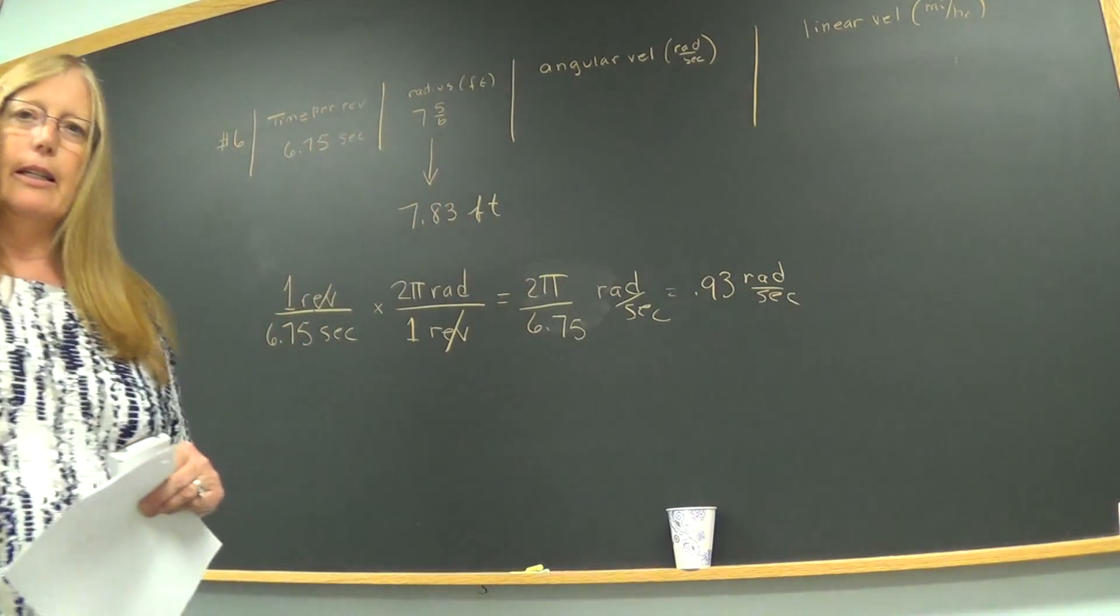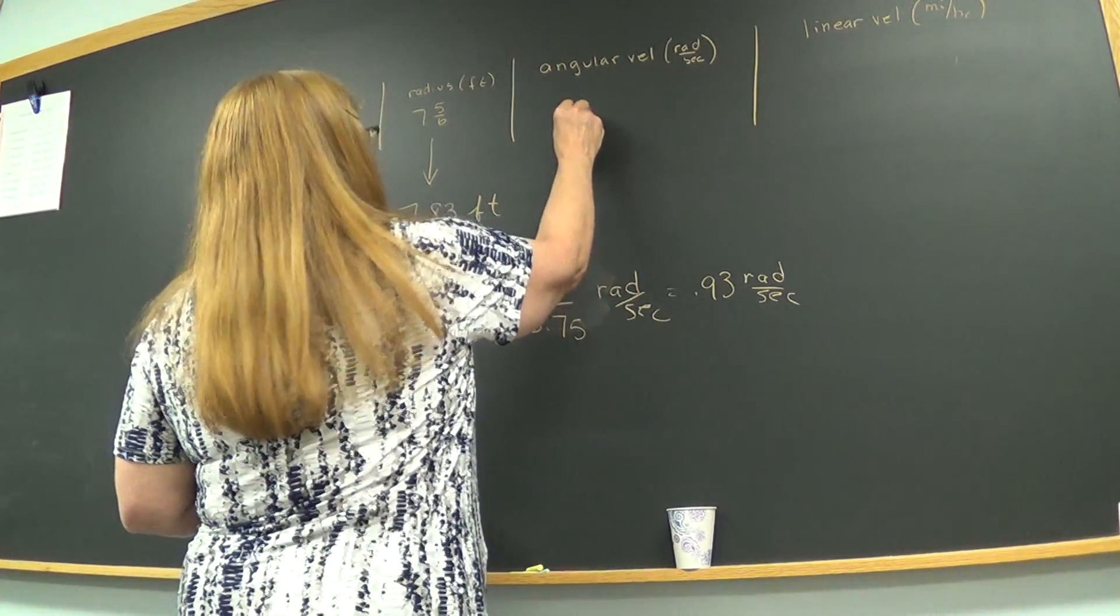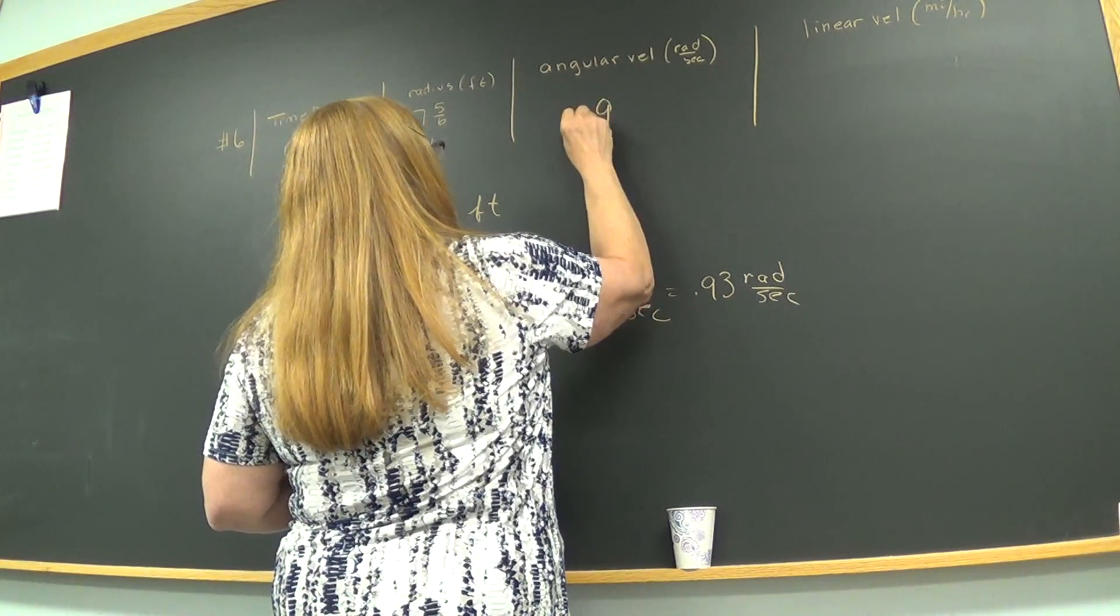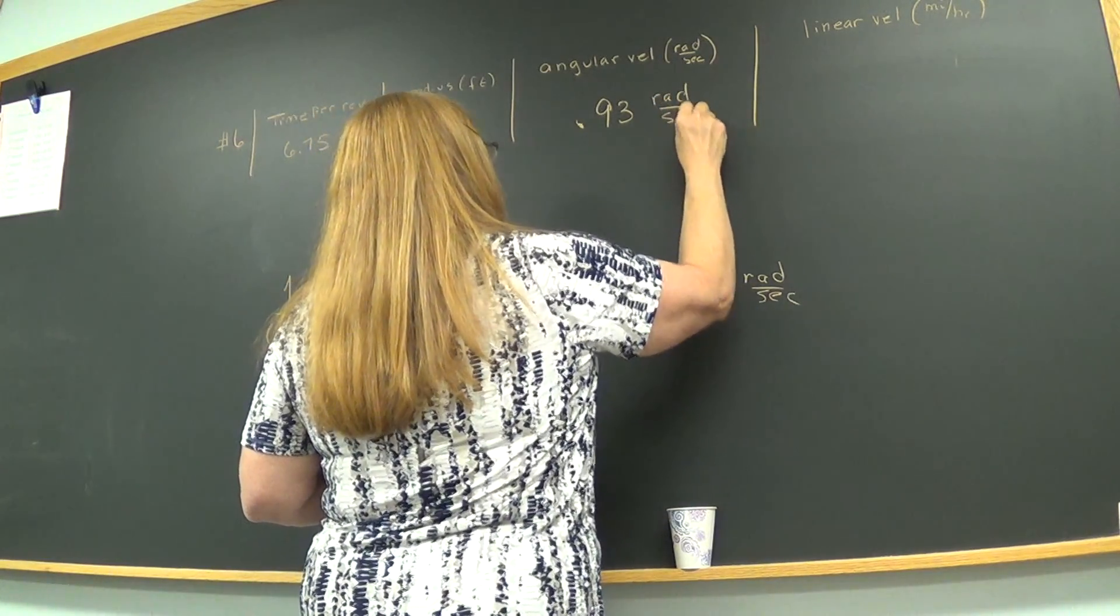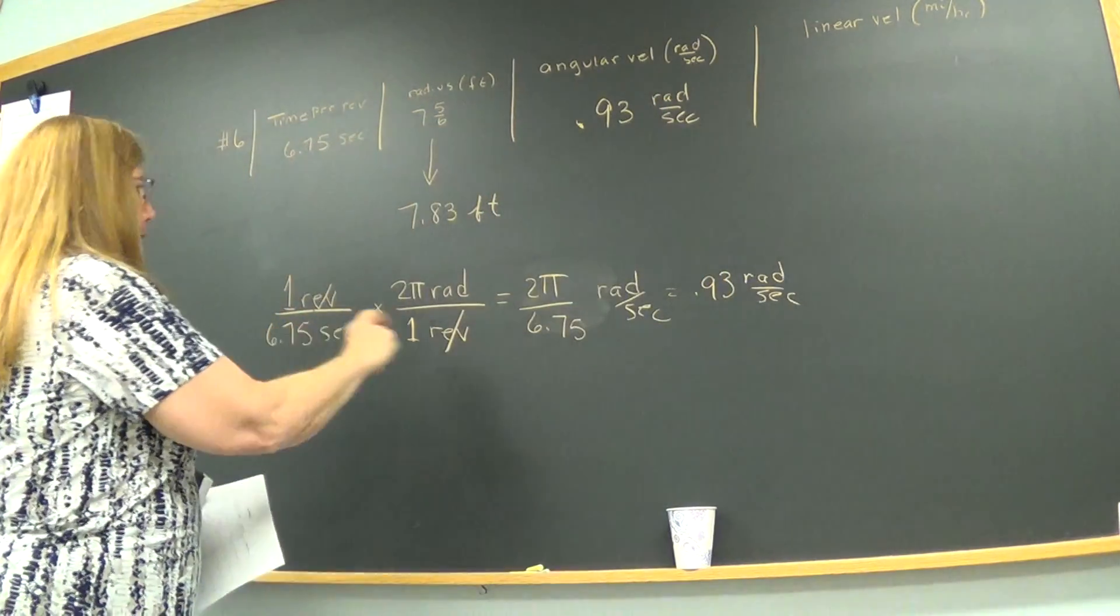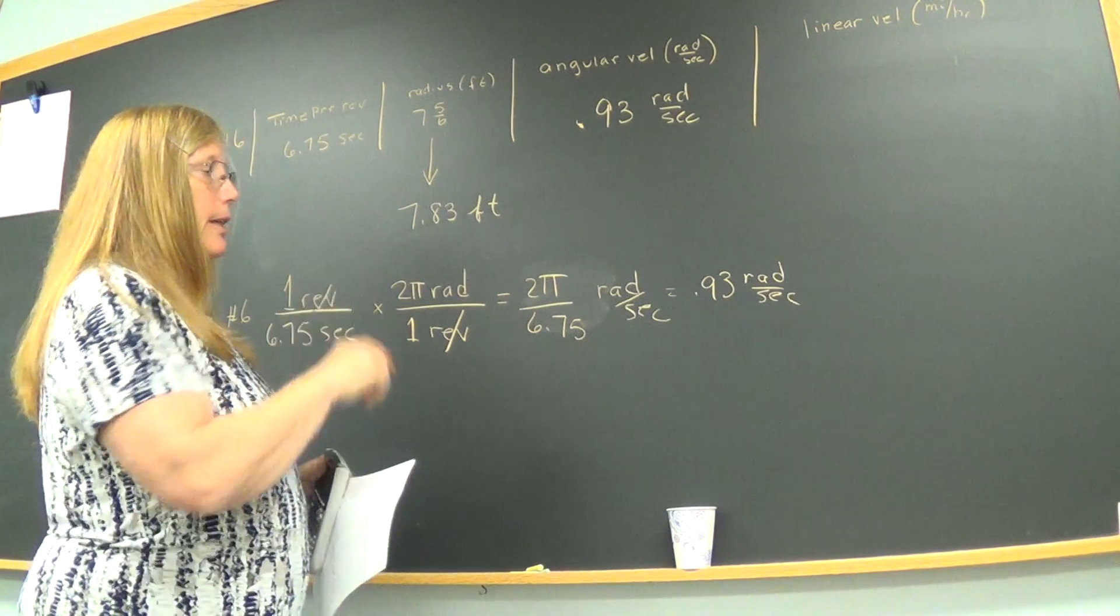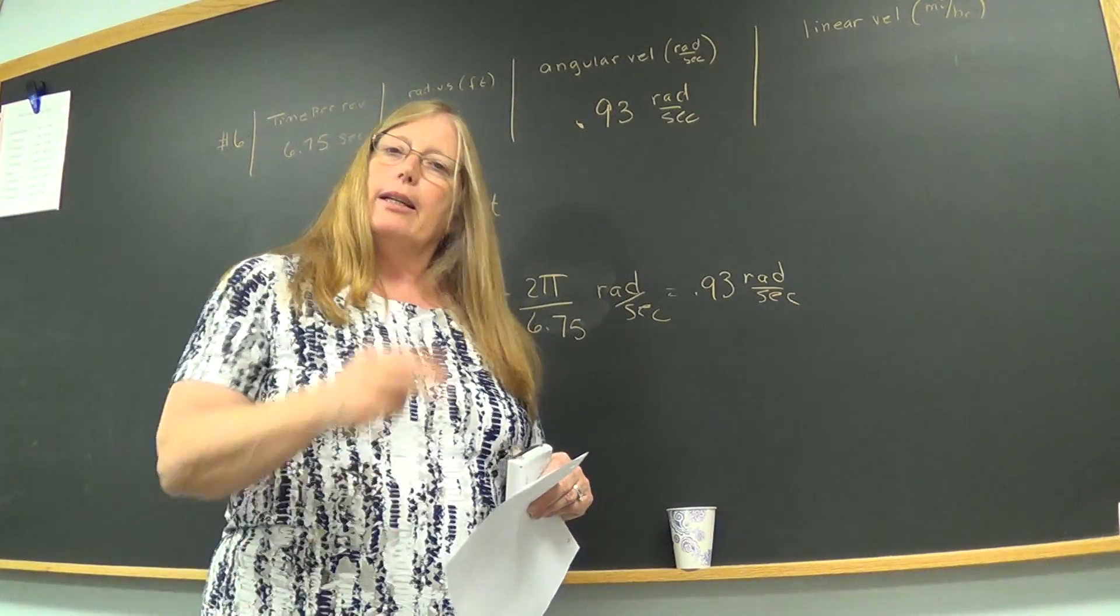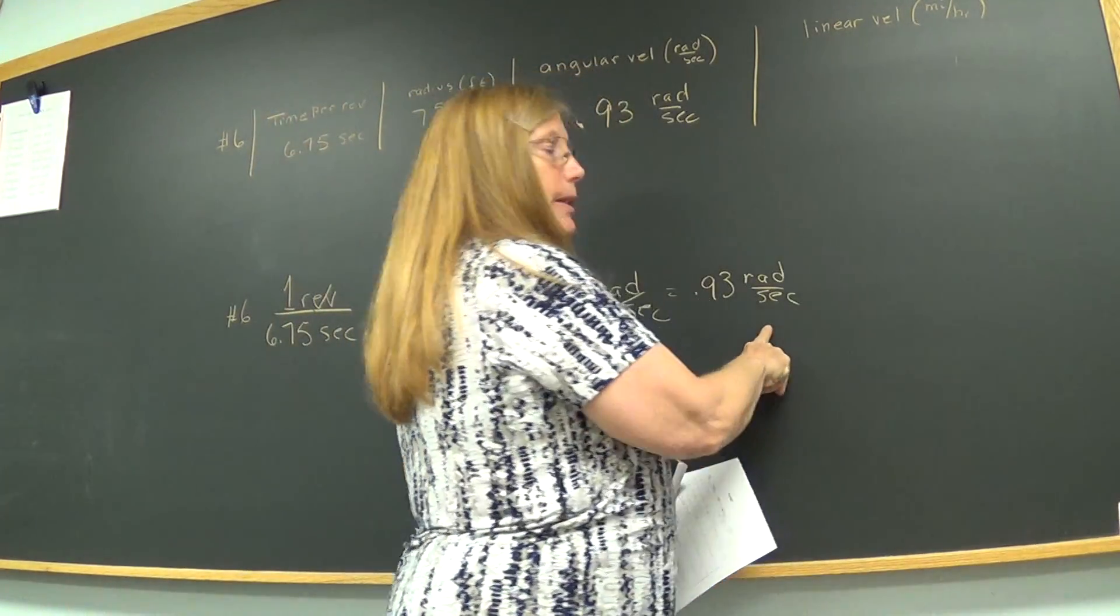So I hope the glare isn't too bad right there and you can see that. So that's going to go up here probably in the glare. 0.93 radians per second. And I ask you to do this work on another sheet of paper and you can just put the answers on the chart. 0.93 radians per second.